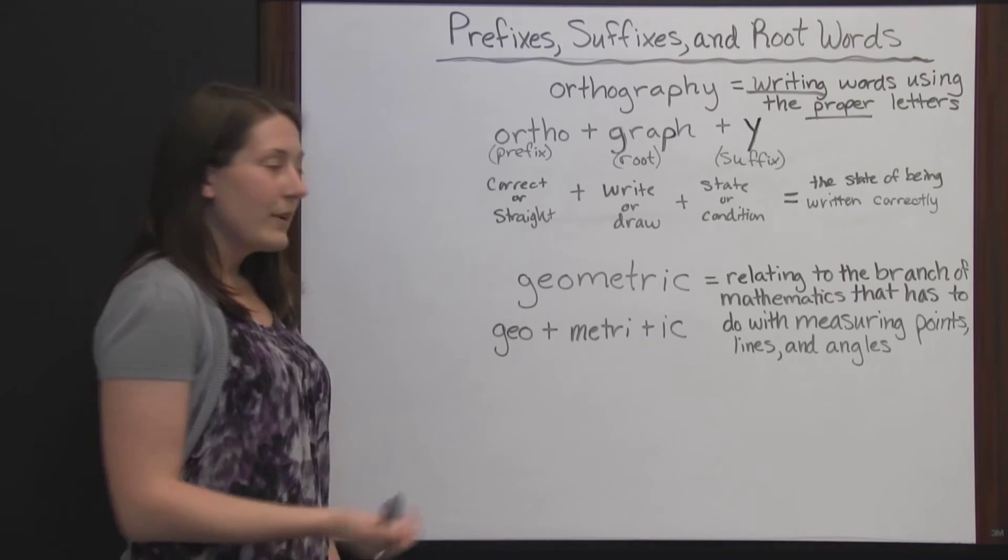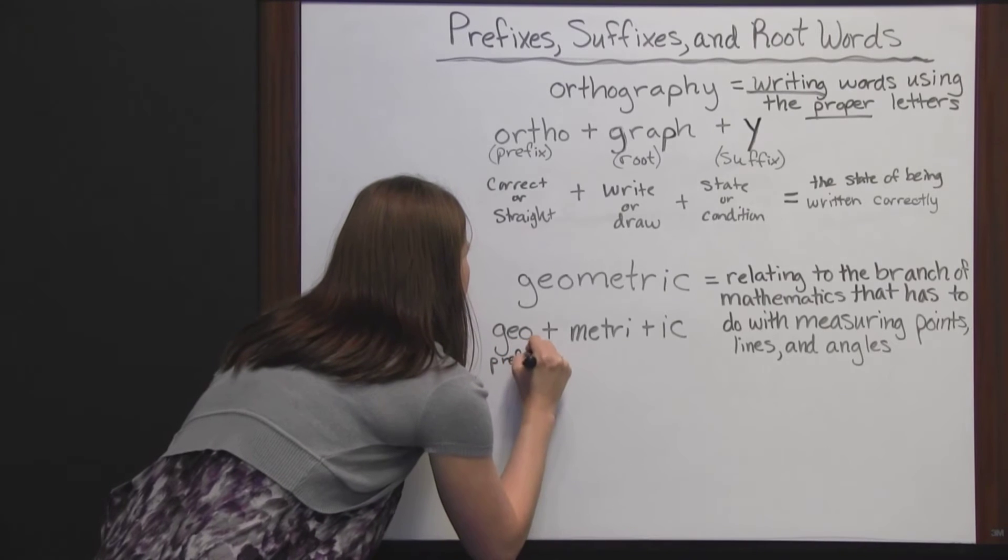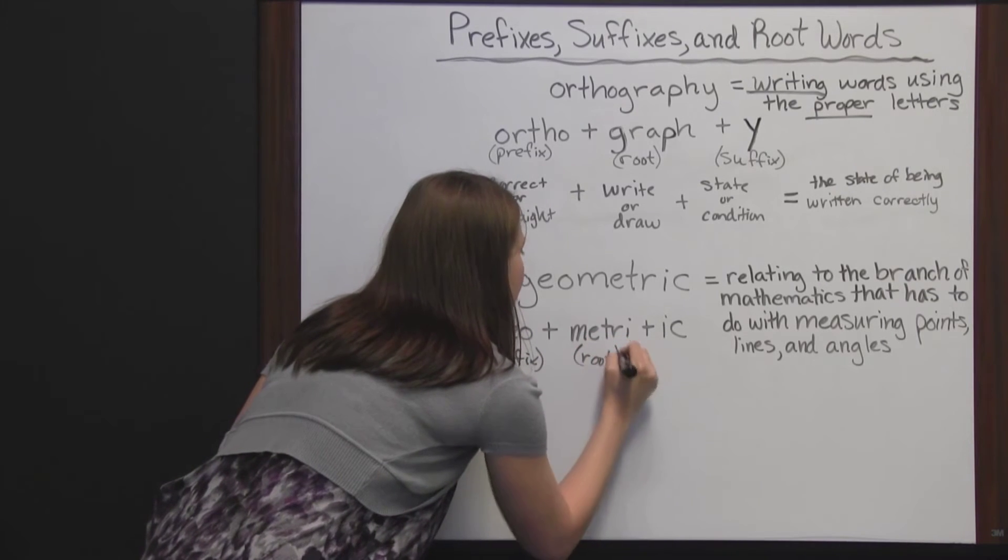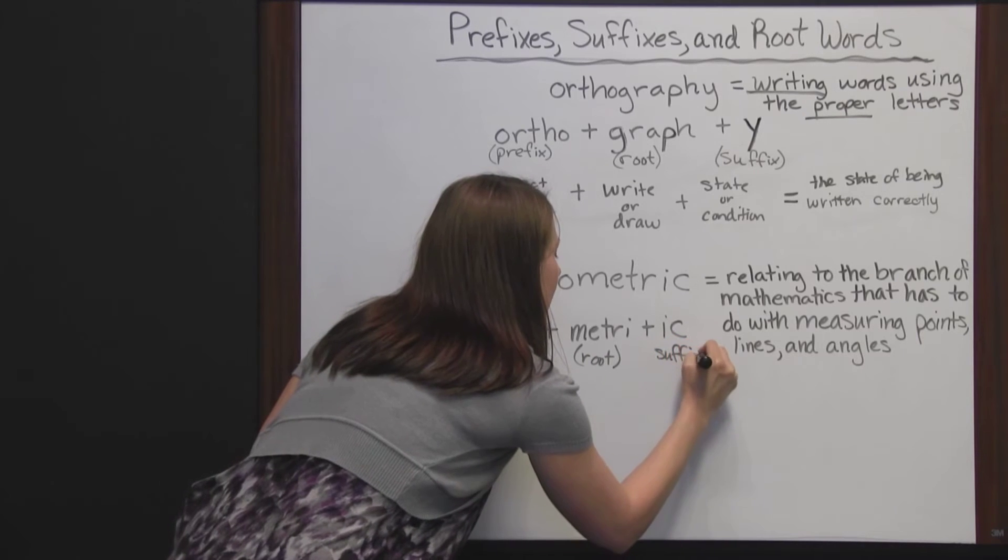Geometric. We'll break down into our prefix, geo, our root word, metre, and our suffix, ick.